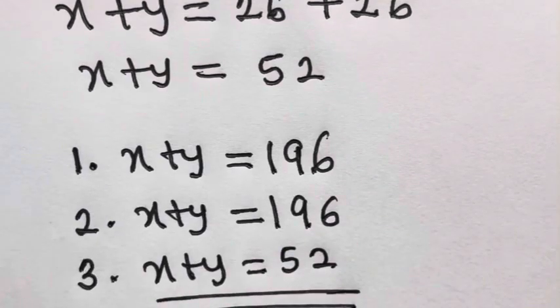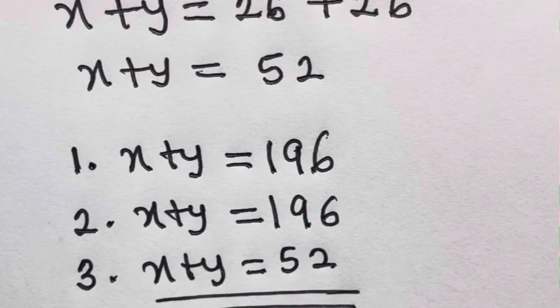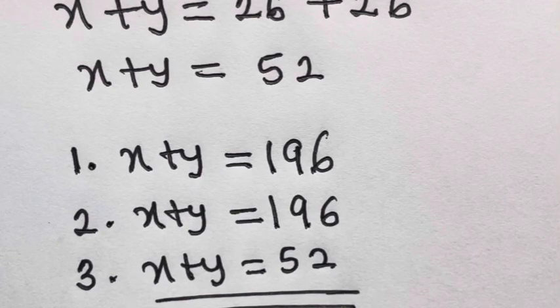We can now declare that these are the sums of x and y we have. For the first case, x plus y equals 196. For the second case, x plus y equals 196. And for the third case, x plus y equals 52. Thank you for watching. I hope you enjoyed this video. Please like and leave a comment, and don't forget to share with your friends and network. Do well to also subscribe to my channel to stay updated on my next video. Bye bye, thank you.